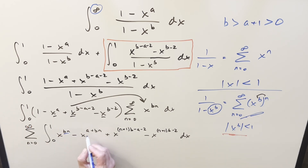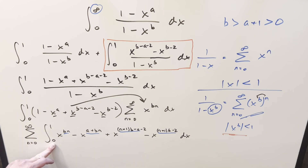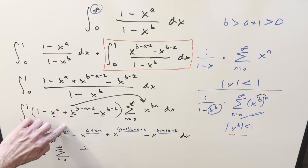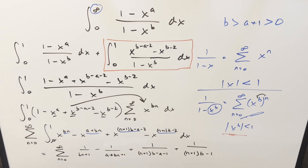Now we apply the power rule to everything inside the sum, since all exponents are constants. Evaluating at the lower bound 0 gives 0, so we ignore that part. Evaluating at the upper bound 1, all numerator terms become 1 to some power, so they vanish. After integrating, each term contributes a denominator of (bn plus 1), giving us a resulting series that's a bit complicated — let's clean up the board and evaluate it.